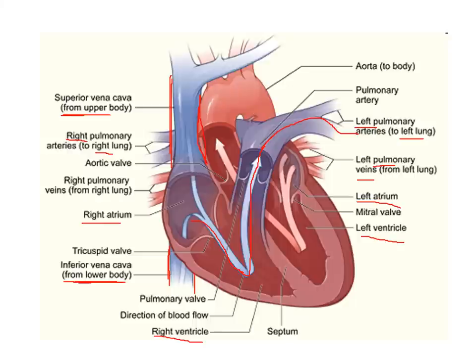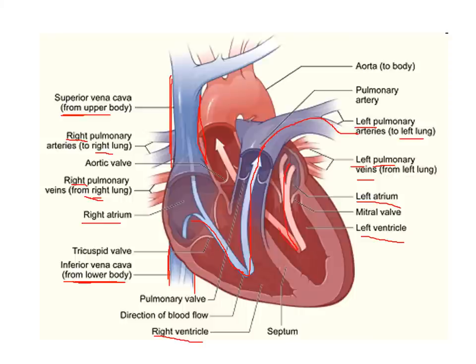The oxygenated blood from the lungs first reaches the left atrium of the heart through the left and right pulmonary veins. The oxygenated blood from the right lung reaches the left atrium through the right pulmonary veins, and the oxygenated blood from the left lung reaches the left atrium through the left pulmonary vein. So the pulmonary veins carry oxygenated blood from the lungs to the heart, emptying it into the left atrium. From the left atrium, the oxygenated blood reaches the left ventricle, from where it is pumped into the aorta and through to the rest of the systemic circulation.